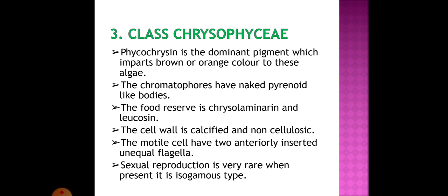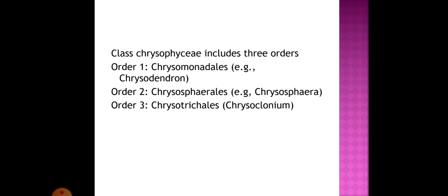Moving on to the third class: Chrysophyceae. Phycochrysine is the dominant pigment which imparts brown or orange color to these algae. Chromatophores have naked pyrenoid-like bodies. The food is reserved as chrysolaminarin and leucosin. The cell wall is calcified and non-cellulosic. Motile cells have two anteriorly inserted unequal flagella. Sexual reproduction is very rare; when present, it is of isogamous type. Class Chrysophyceae includes three orders: Chrysomonadales (example: Chrysodendron), Chrysospirales (example: Chrysospira), and Chrysocapsales (example: Chrysocapsa).